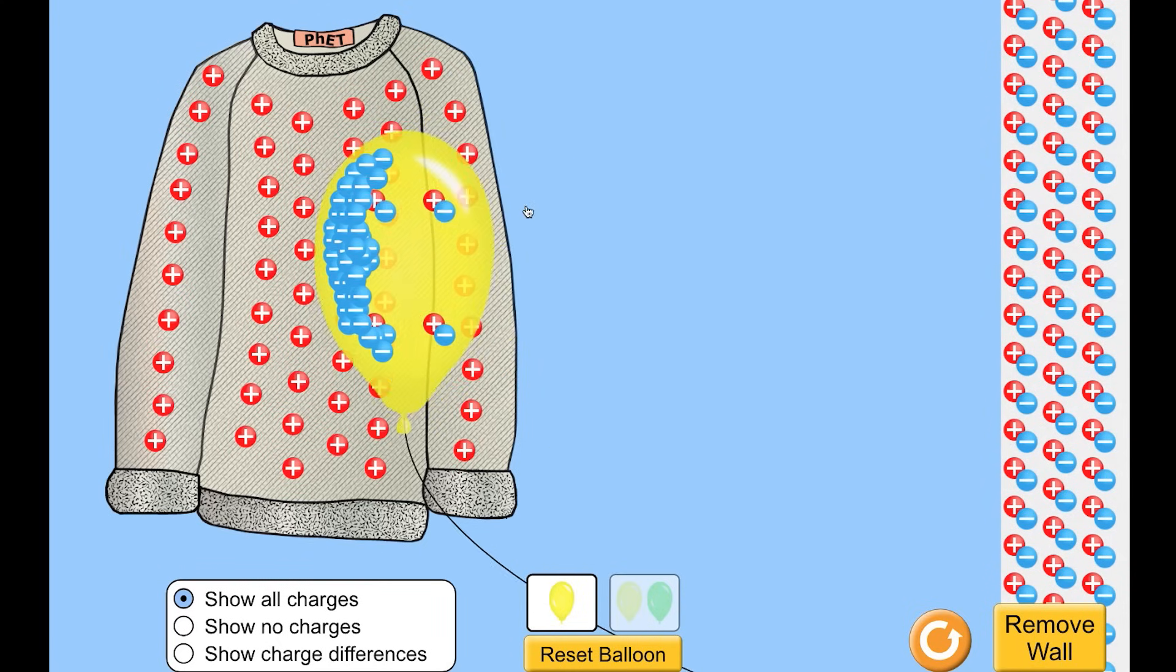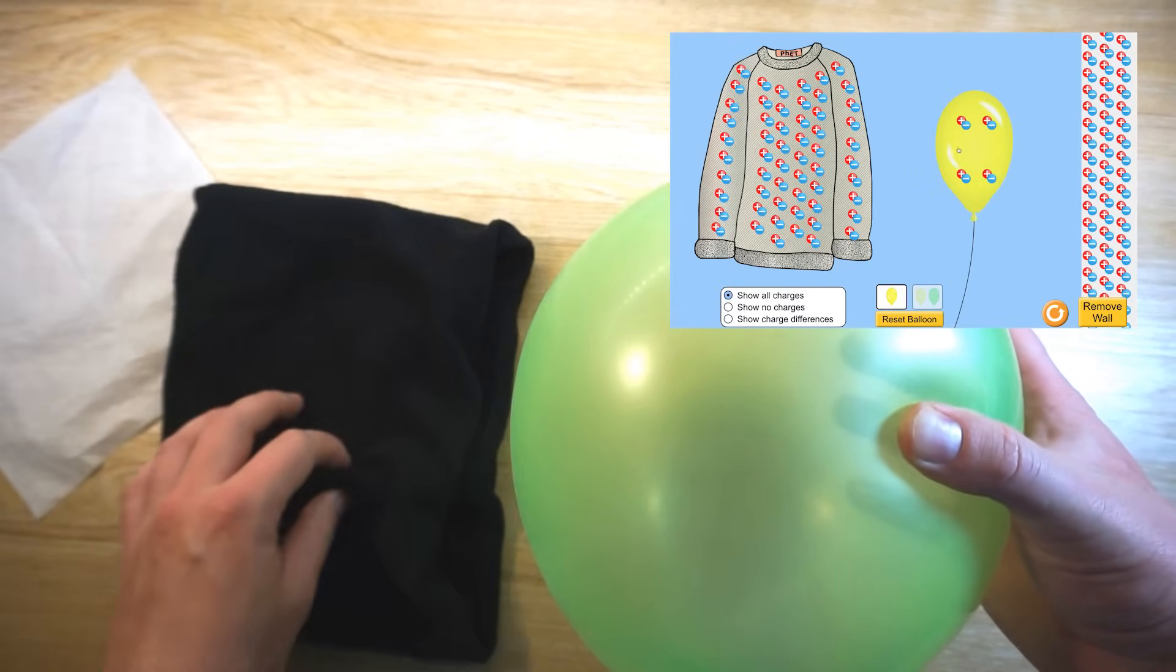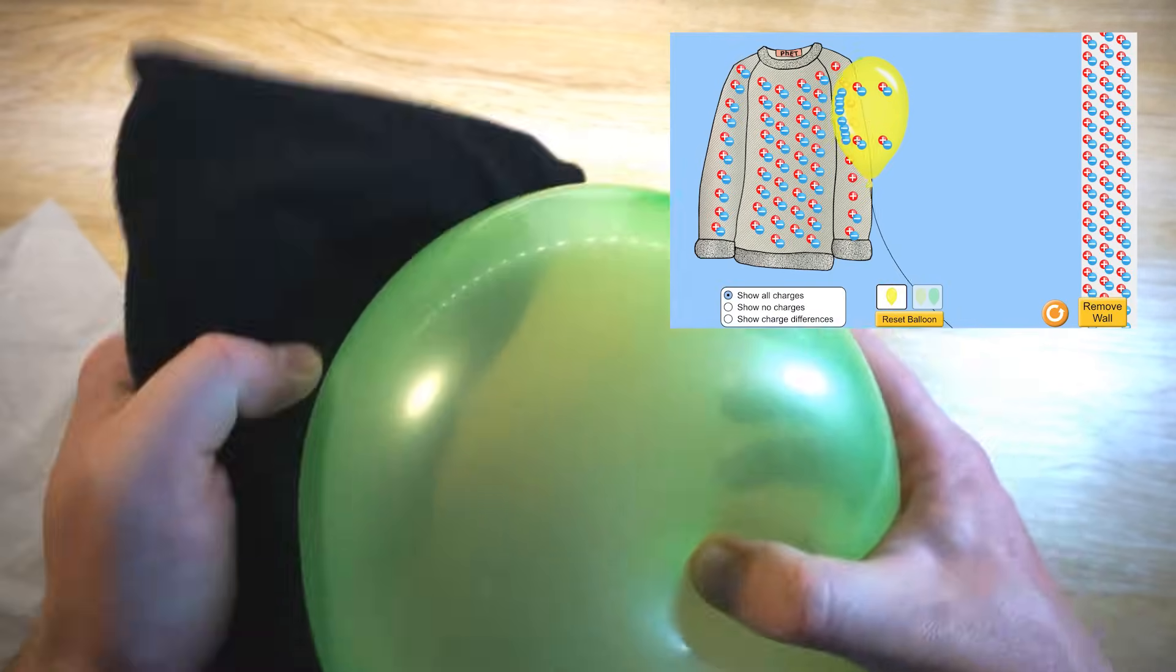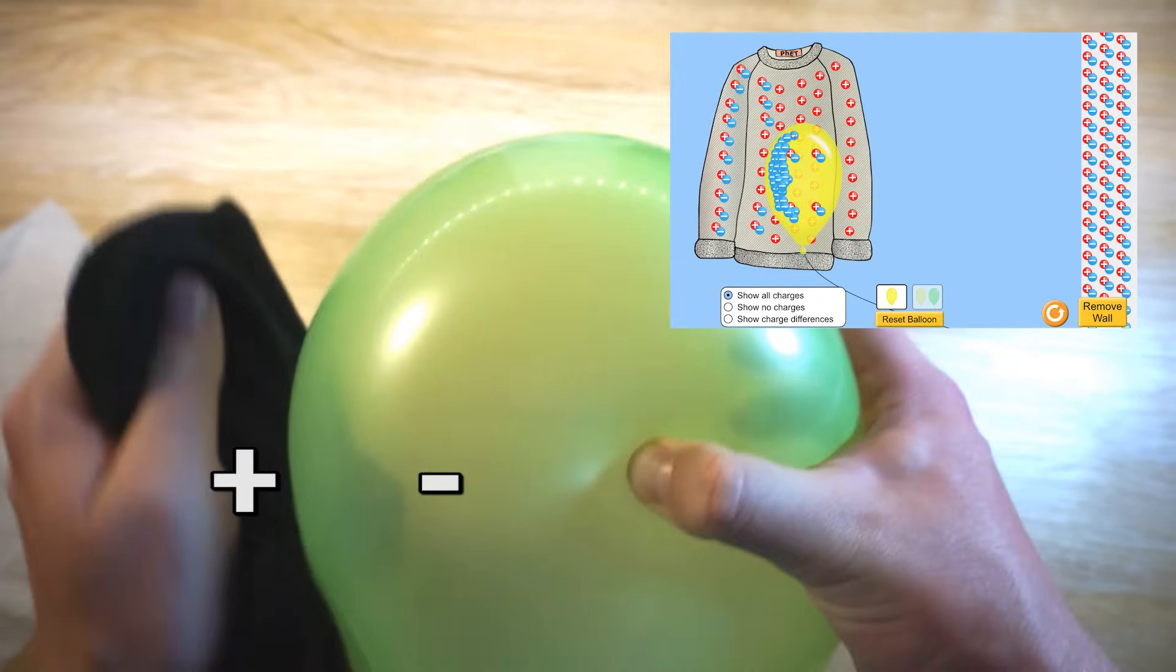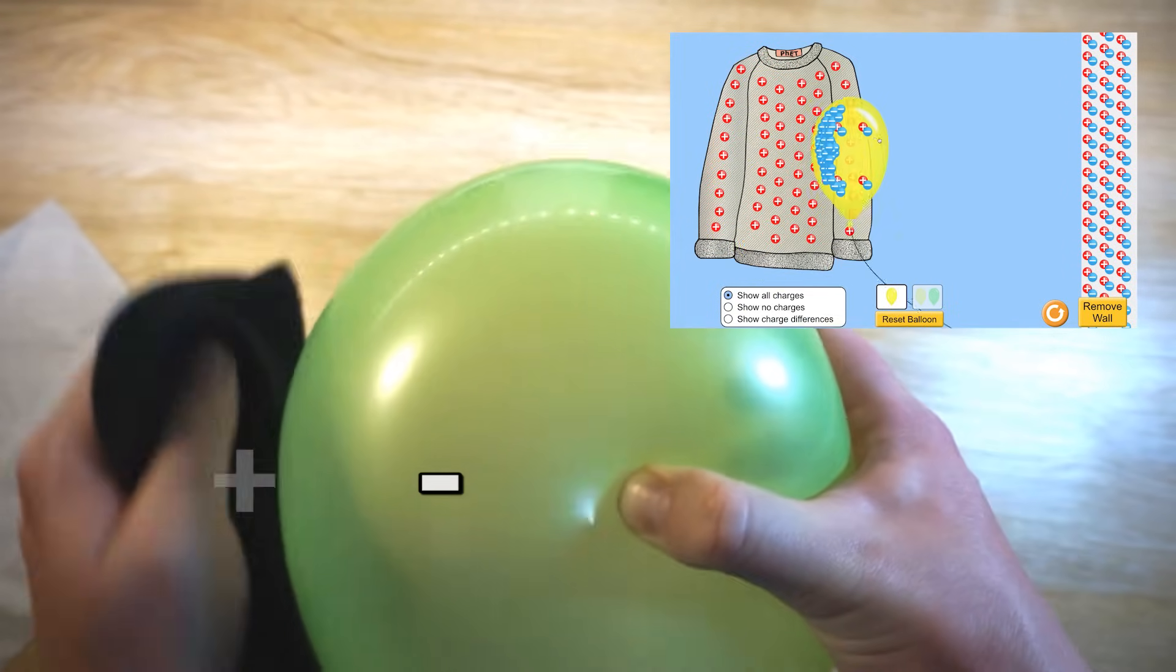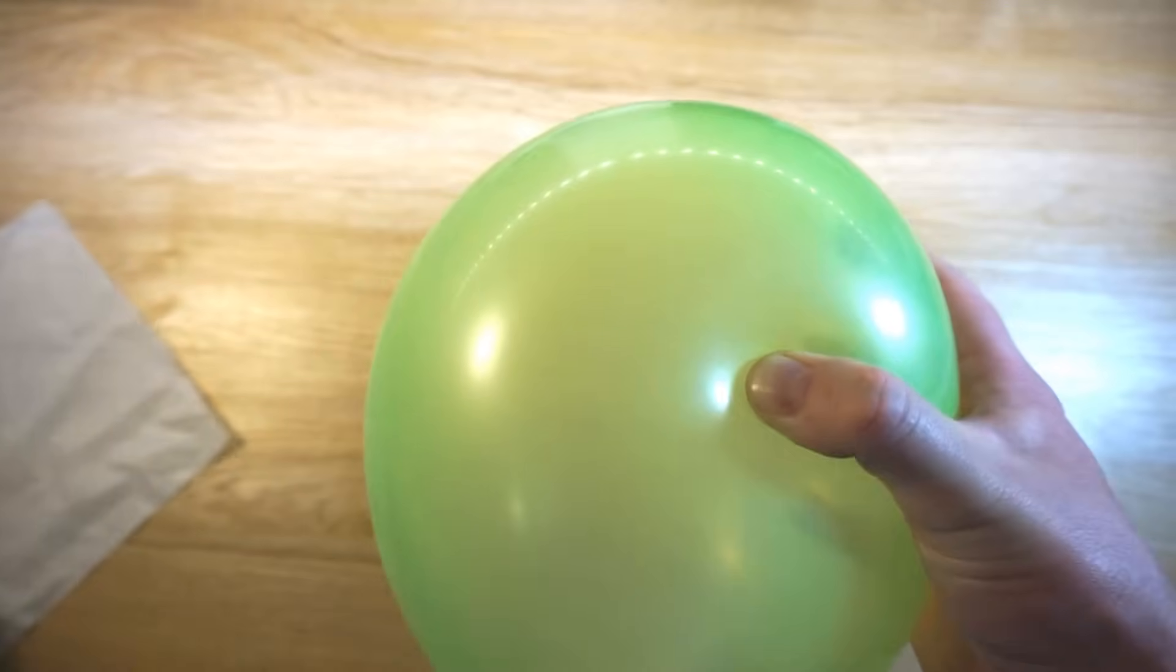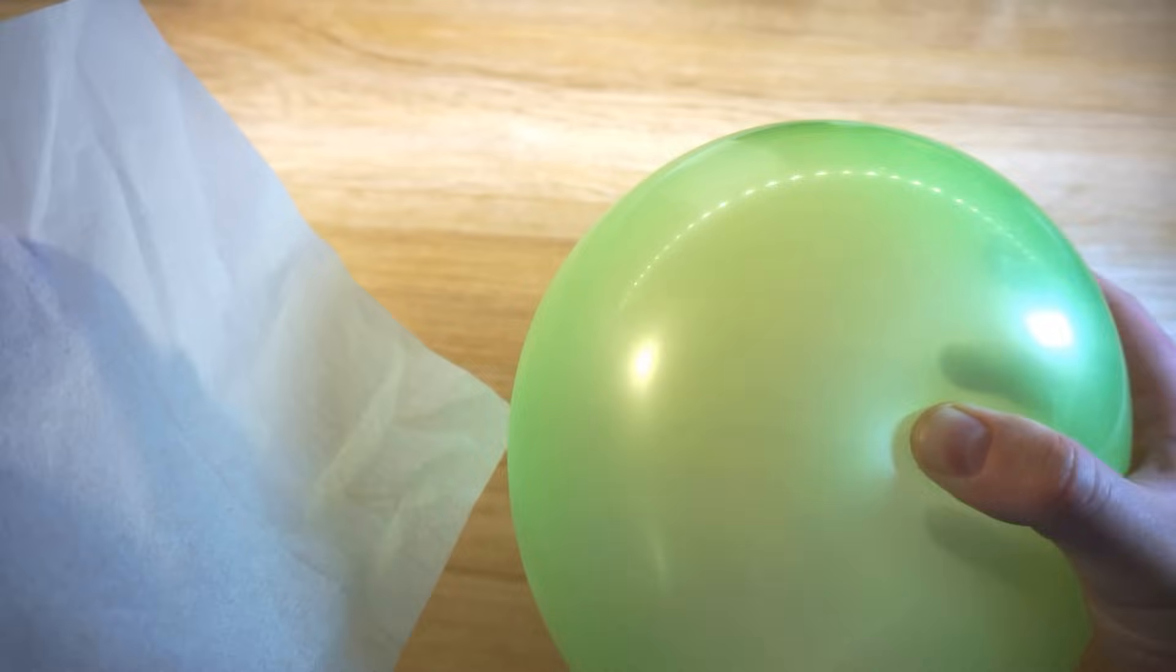Sometimes other objects will become attracted to these things that have charges. For example, if I rub a cloth against a balloon, the electrons will transfer from the cloth to the balloon, so the cloth becomes positively charged because it's lost these negative electrons and the balloon becomes negatively charged. And now if we hold the balloon up to some things, they'll be attracted to it because it has this negative charge.